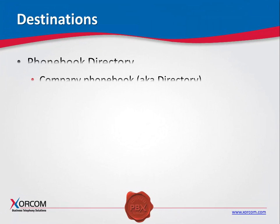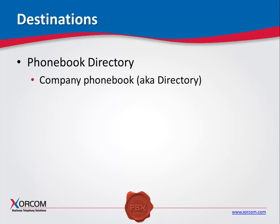The phone book directory is also known as directory and provides callers with a listing of the phone numbers for entities in the company. The directory can be incorporated in an IVR or can be made available using a feature code, typically 411, to internal users.